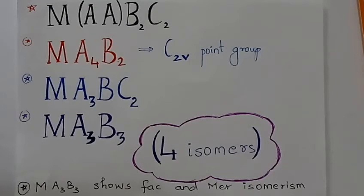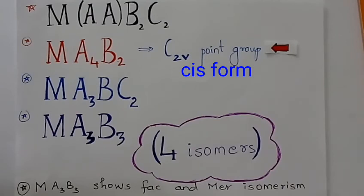Complexes with these formulas show four isomers. Please make a note of it. The complexes with the formula MAA4B2 have the point group C2V.